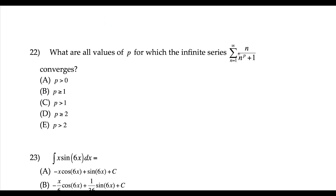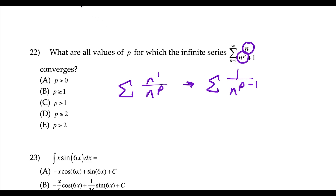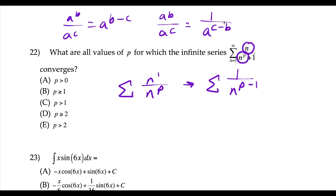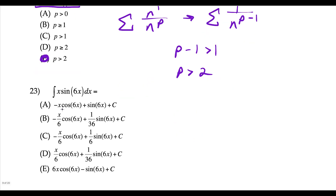Question 22: I focus on the leading terms. With n to the first over n to the p, this simplifies to 1 over n to the p minus 1. Using the algebra rule a to the b over a to the c equals 1 over a to the (c minus b), for p-series convergence, the exponent p minus 1 must be greater than 1, which means p must be greater than 2 — choice E.